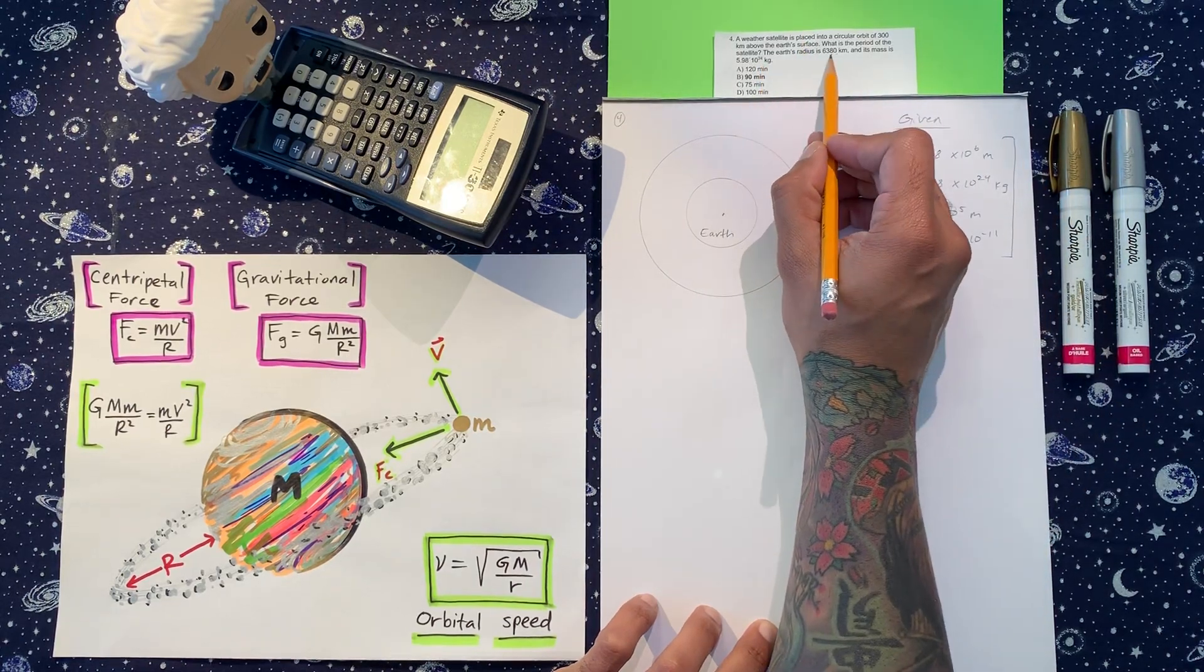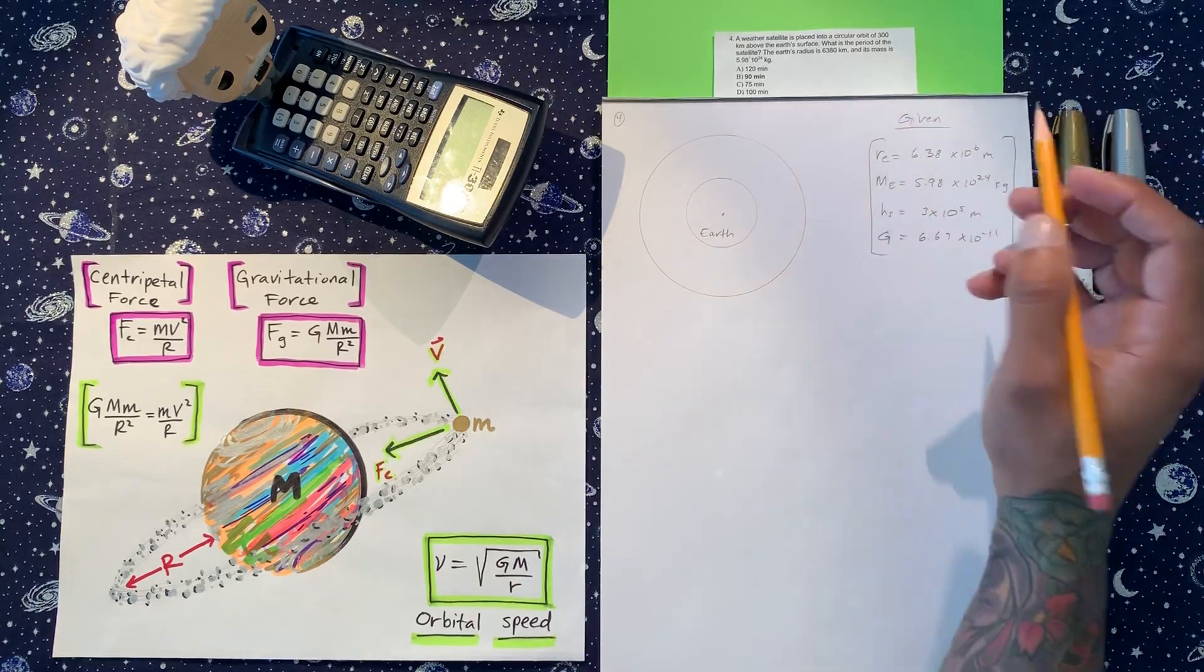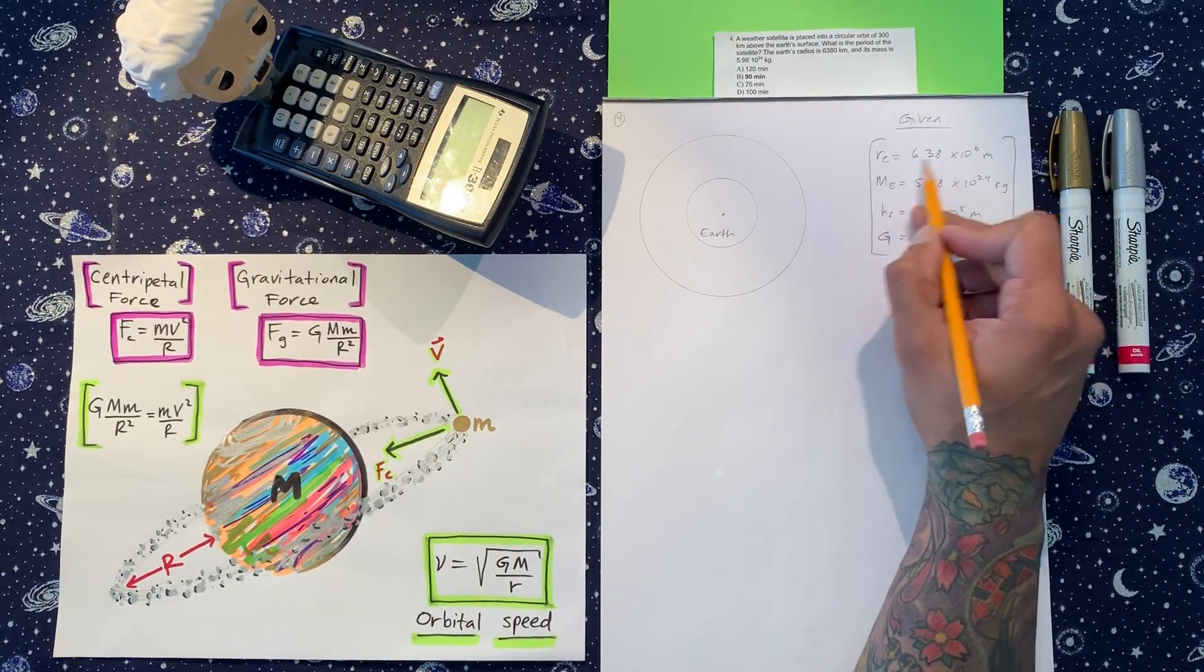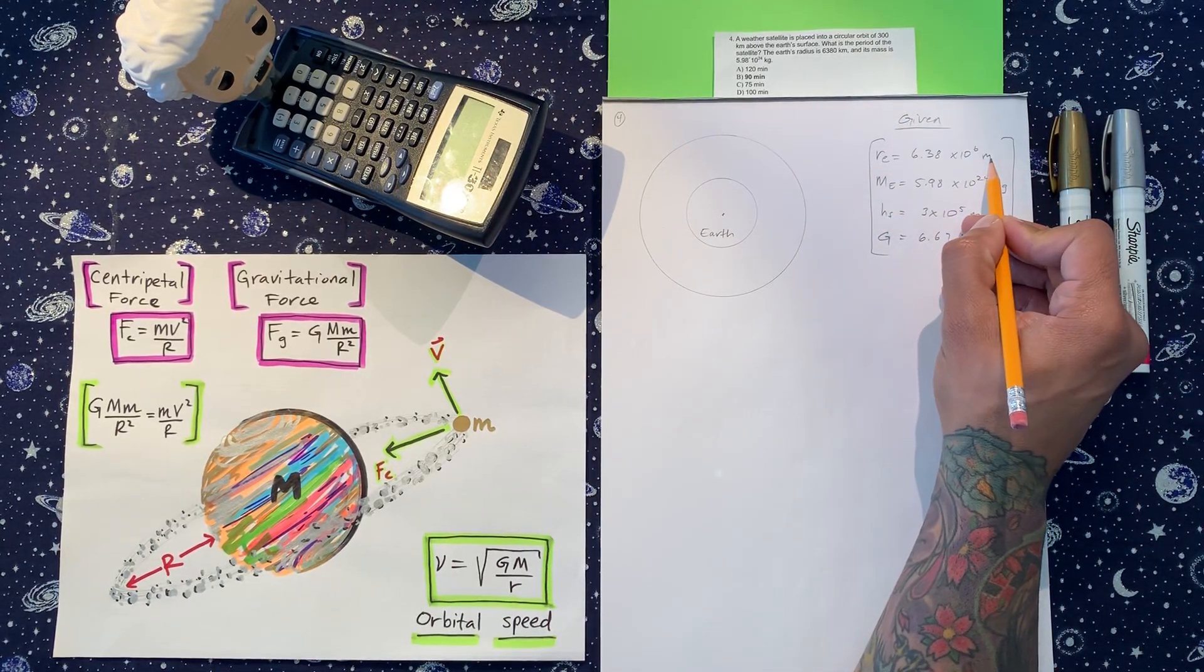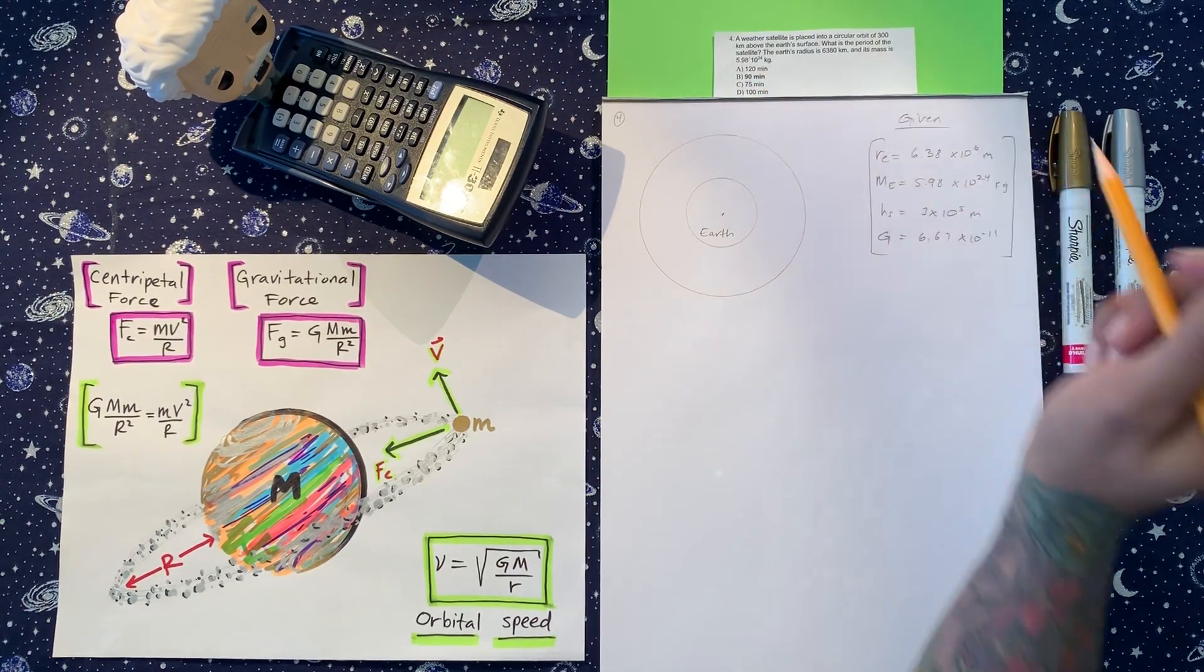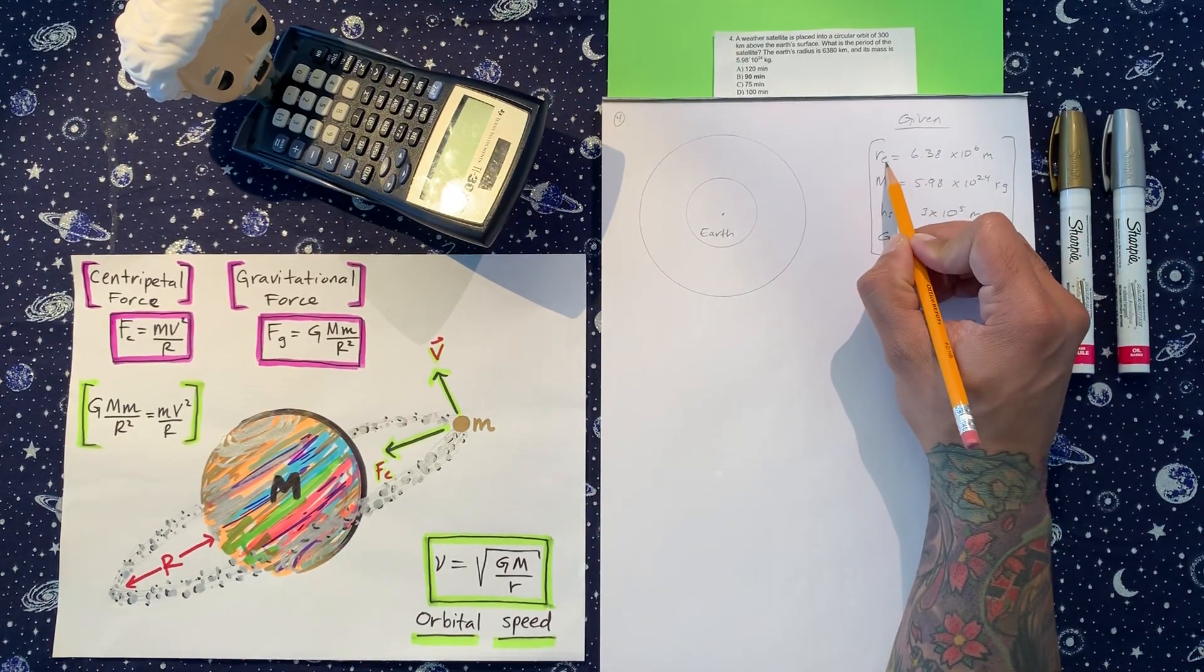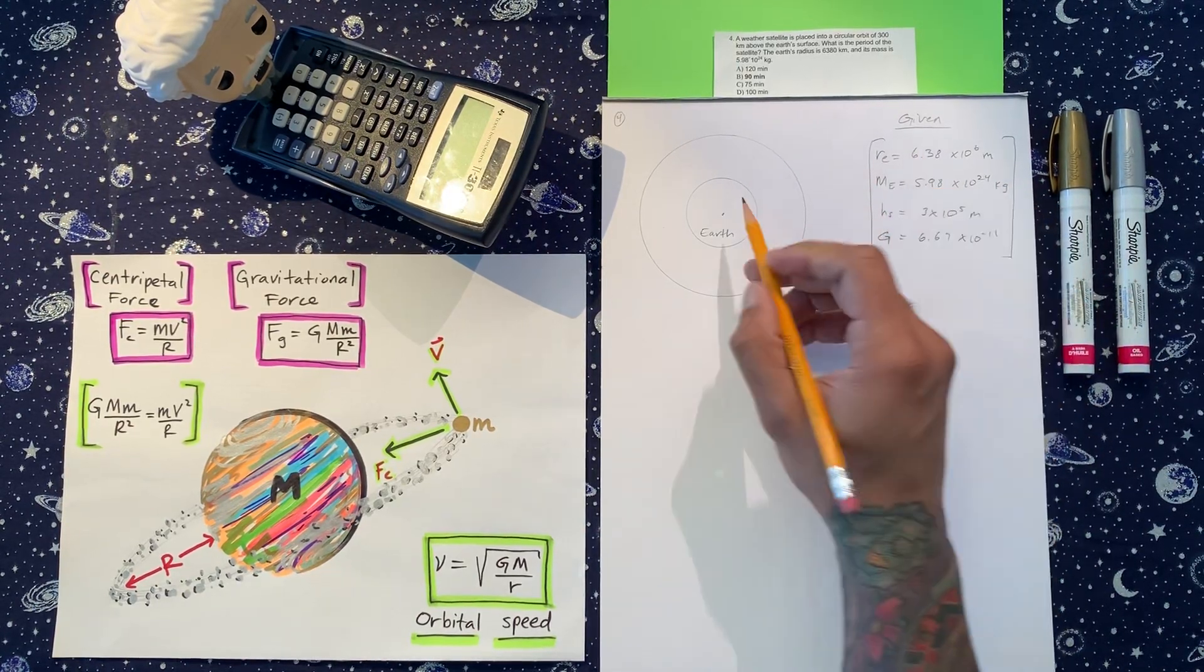And then the Earth's radius is 6,380 kilometers. Again, nice try, but we need to convert that. So here I have it in meters, and its mass is all that, kilograms, so that's fine. So I'm going to write r, little r_e, for the radius of the Earth.